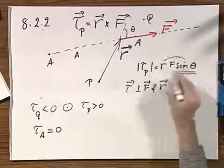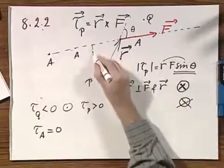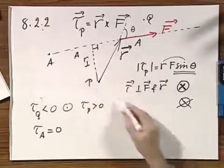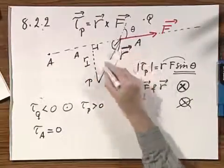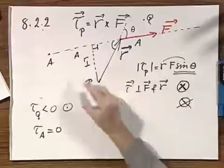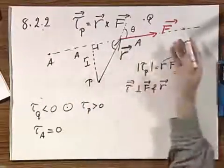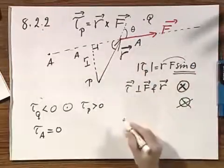Because R sine theta, that is this distance, I call it often R perpendicular. And you should immediately convince yourself that this is R sine theta. And so for all these points A on this line, R sine theta equals zero. And so the torque is zero.